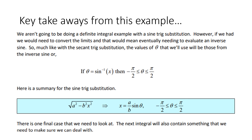The key takeaway from this example: if you encounter the square root of a² minus b²x², the substitution x = (a/b) sin θ will work. There is one more case we are going to look at.